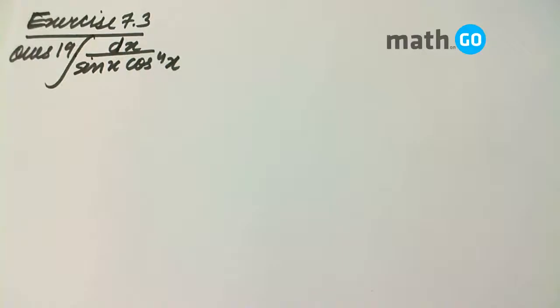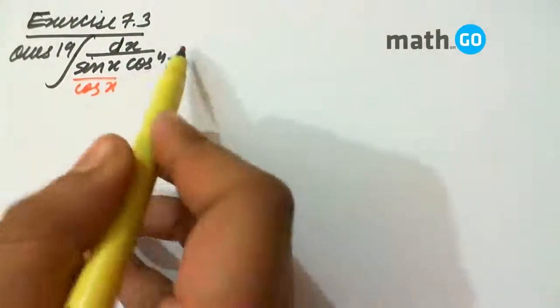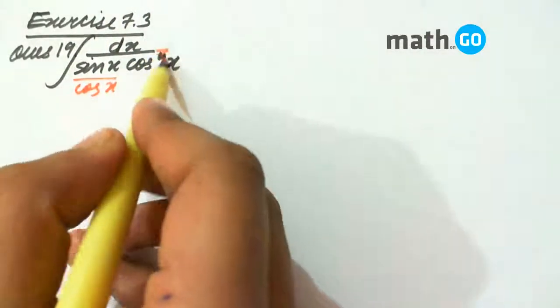Exercise 7.3, question number 19. We have to integrate. What will we do in this? We will divide the denominator by cos x and multiply. Sorry, it is cube.